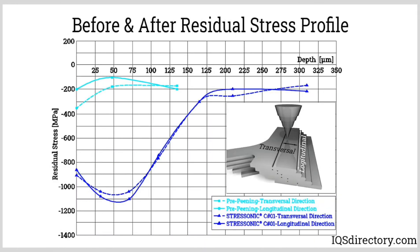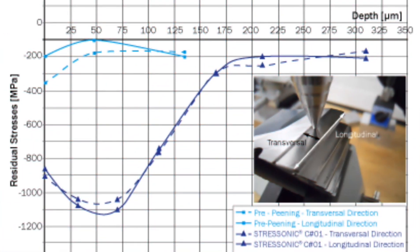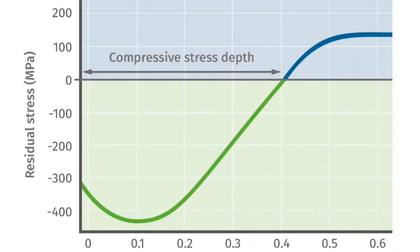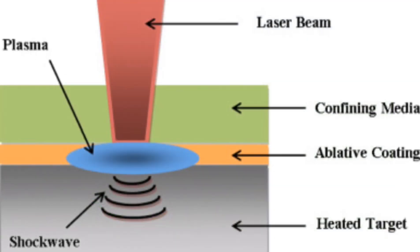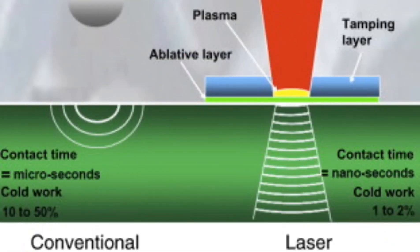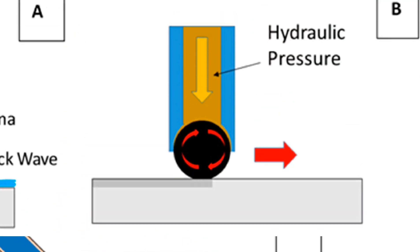Pinning is a cold work process, meaning it occurs at temperatures below the material's recrystallization temperature. Cold working induces changes in the material structure, leading to increased dislocation density and deformation hardening. These changes contribute to reduction of residual stresses and enhance the material's mechanical properties.